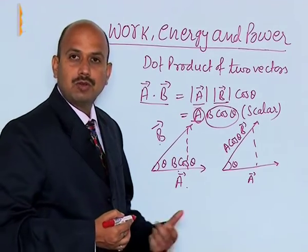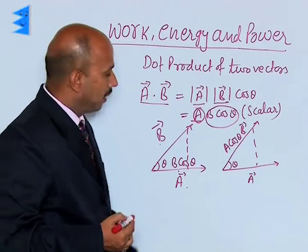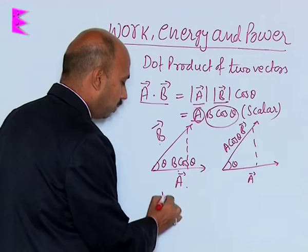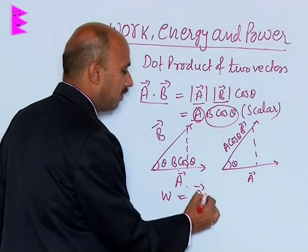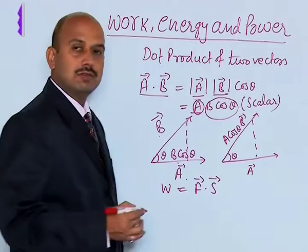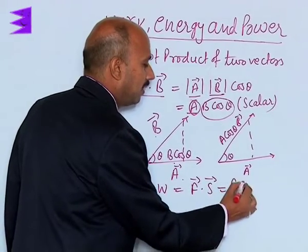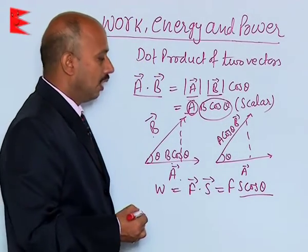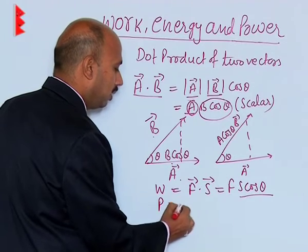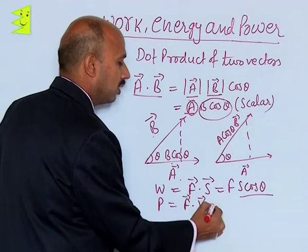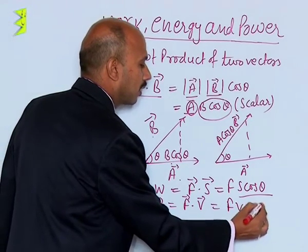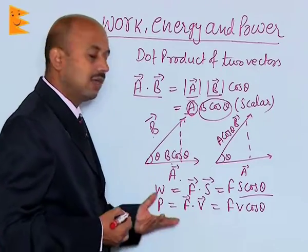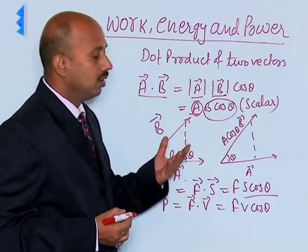There are many quantities which are represented as the dot product of two vectors. The first one: work is equal to vector F dot vector s (displacement), written as Fs cosθ. Another example is power, which is equal to force dot velocity, that is Fv cosθ. In both cases we are taking the dot product of two vectors, and work as well as power are scalar quantities.